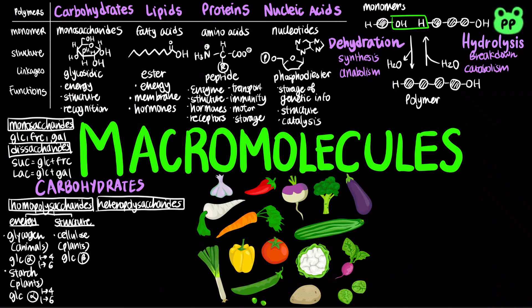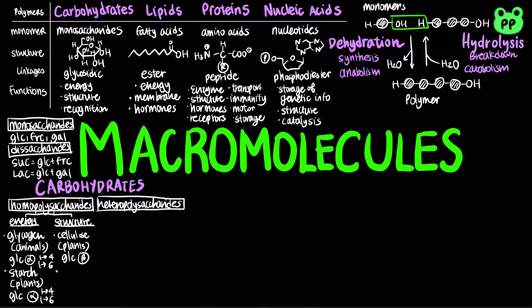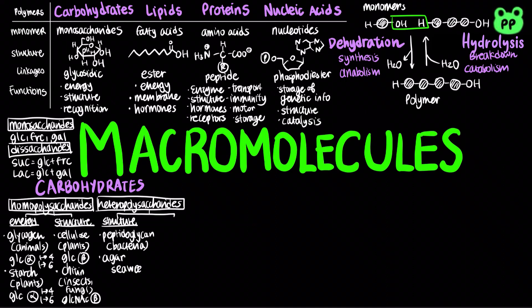Therefore, cellulose in human food passes through the digestive tract as insoluble fiber. Chitin is another structural polysaccharide found in the exoskeleton of arthropods and the cell walls of many fungi, which consists of beta linkages of N-acetylglucosamine. Structural heteropolysaccharides include peptidoglycan, which is found in bacterial cell walls, and agar, which is found in seaweed and algae.